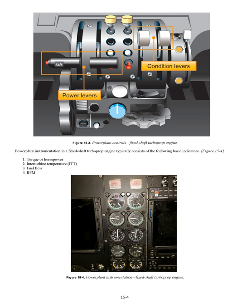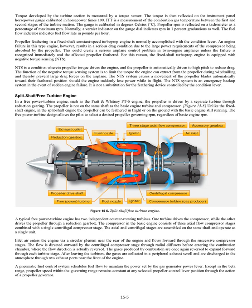On the fixed shaft constant speed turboprop engine, the power lever is advanced or retarded to increase or decrease forward thrust. The power lever is also used to provide reverse thrust. The condition lever sets the desired engine RPM within a narrow range between that appropriate for ground operations and flight. Powerplant instrumentation in a fixed shaft turboprop engine typically consists of: 1) Torque or horsepower; 2) Inter-turbine temperature (ITT); 3) Fuel flow; 4) RPM. Torque developed by the turbine section is measured by a torque sensor and reflected on the instrument panel horsepower gauge calibrated in horsepower times 100. ITT is a measurement of the combustion gas temperature between the first and second stages of the turbine section, calibrated in degrees Celsius. Propeller RPM is reflected on a tachometer as a percentage of maximum RPM. The fuel flow indicator indicates fuel flow rate in pounds per hour.